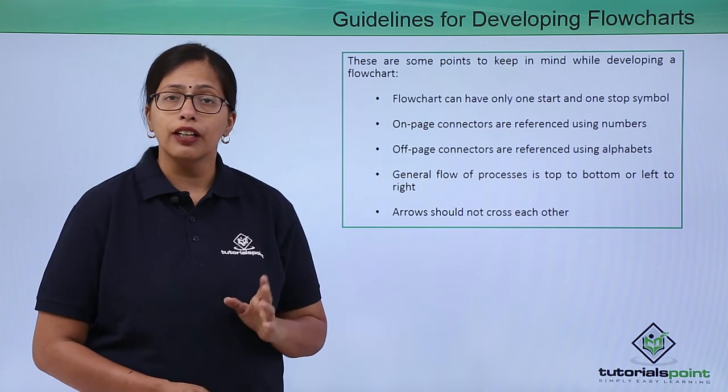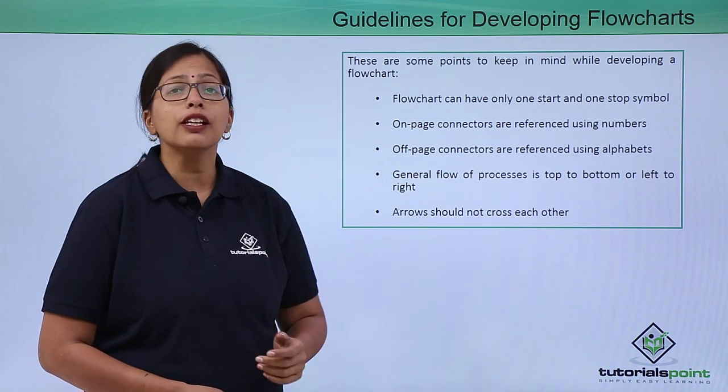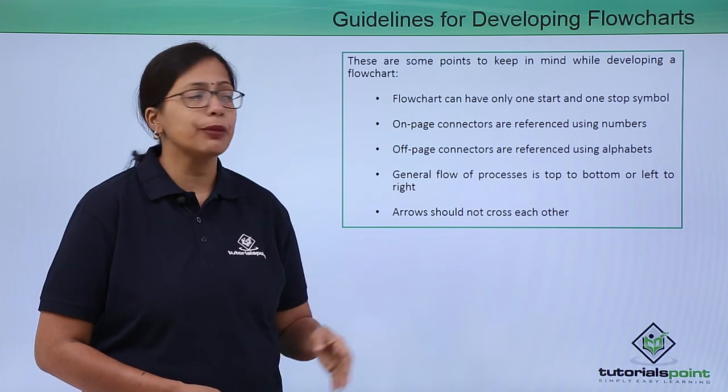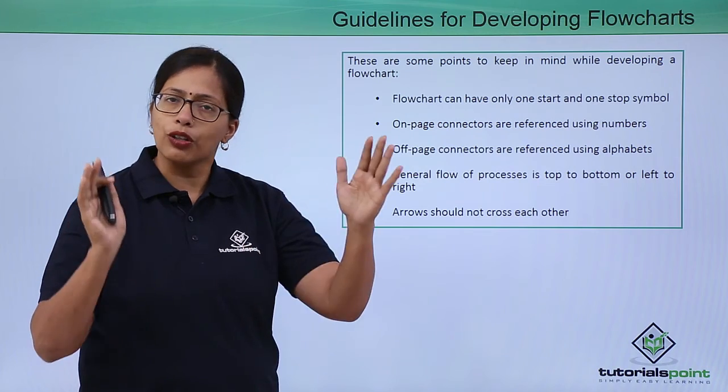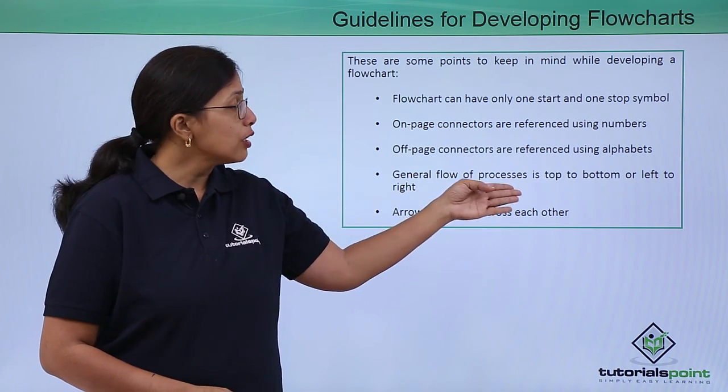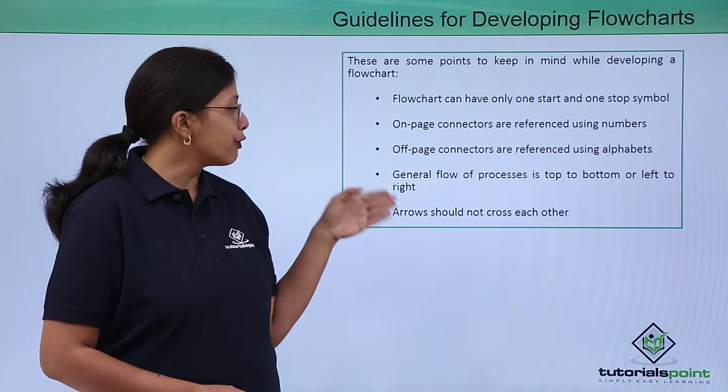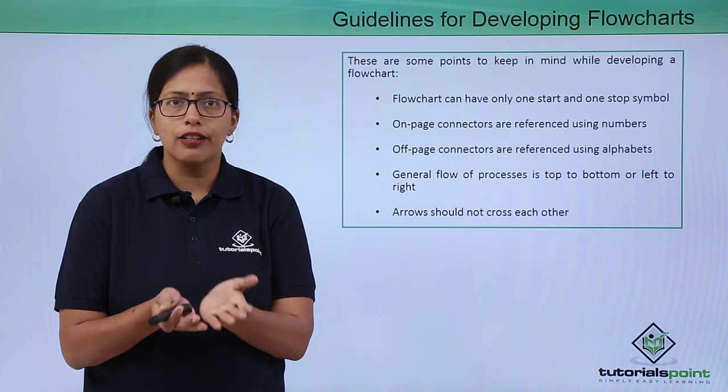On-page connectors are referenced using numbers and off-page connectors are referenced using alphabets. We'll see in our example how we are using numbers if we have two parts of the algorithm on the same page. General flow of processes is top to bottom or left to right. You should not draw a flowchart starting from the bottom of the page and going up.